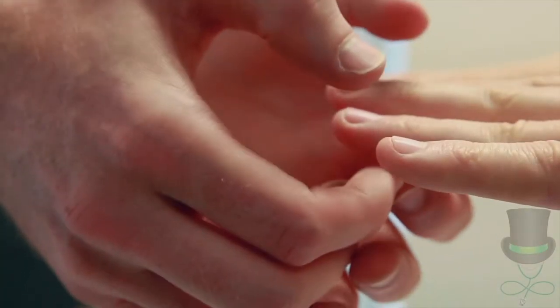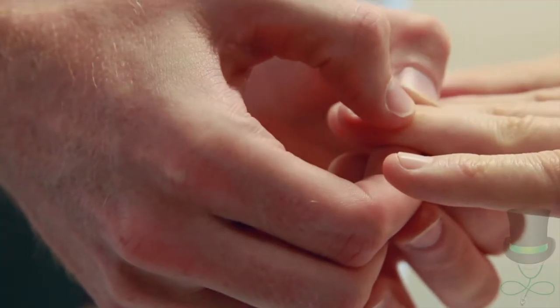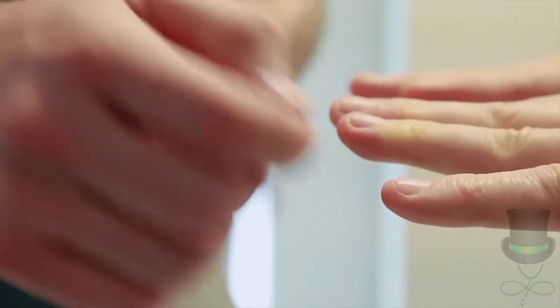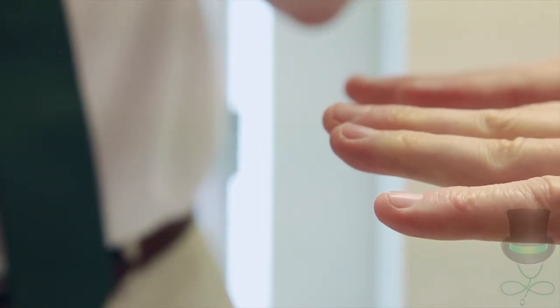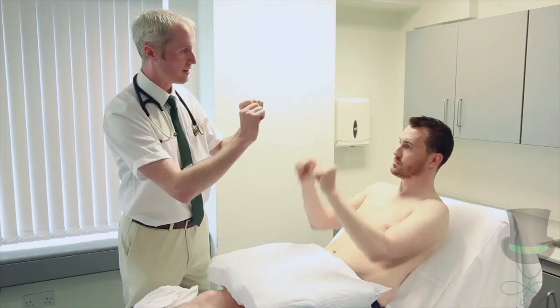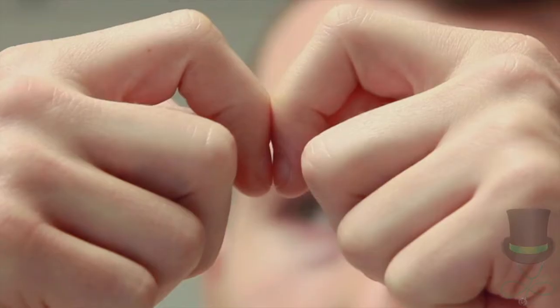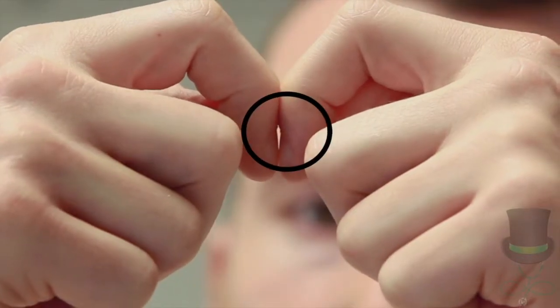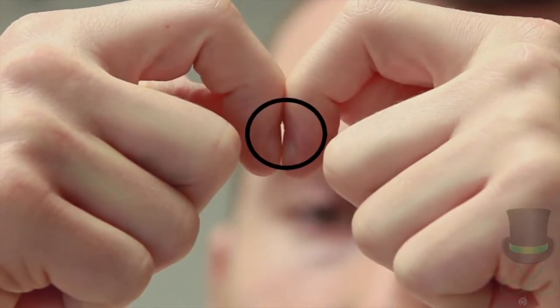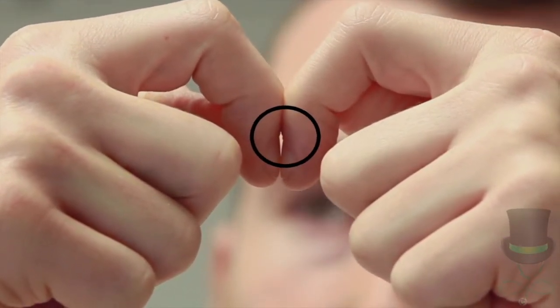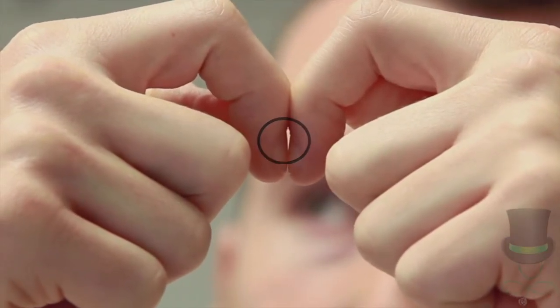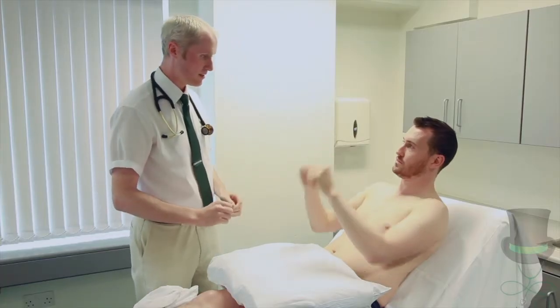Check each finger in turn for increased fluctuance of the nail bed and loss of nail bed angle. To perform Shamrot's test, ask the patient to oppose the nails of the index fingers of each hand. Look for light at the nail bed between the two nails.